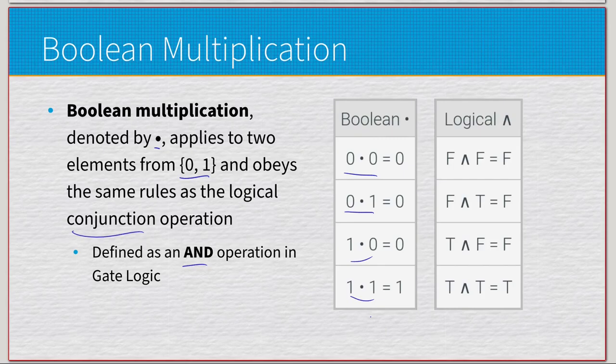Boolean addition is denoted by a plus sign. It uses the same alphabet {0, 1} because it's going to be Boolean, and we have logical disjunction as opposed to conjunction. It is also known as an OR gate in gate logic. Just like disjunction works, we have 0+0=0, 0+1=1, 1+0=1, and 1+1=1.